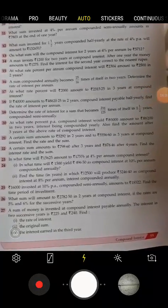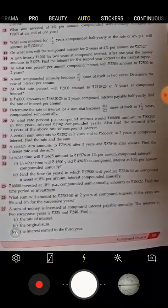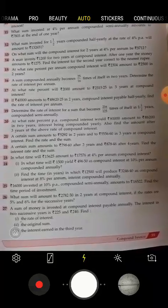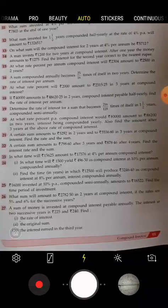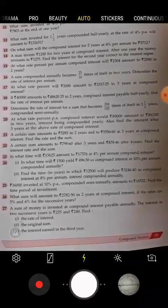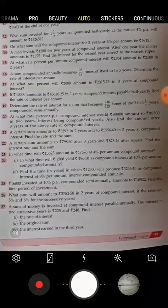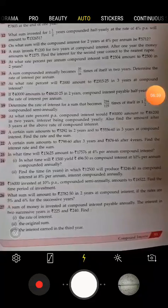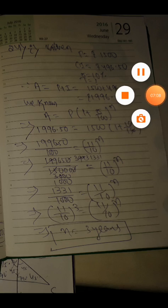Now 24 number: In what time will 1,500 rupees yield 496.50 rupees as compound interest at 10% per annum compounded annually? So we have asked that 1,500 rupees, which is our principal, will yield 496.50 rupees compound interest at 10% interest. Here P equals 1,500 rupees, compound interest has given as 496.50 rupees.